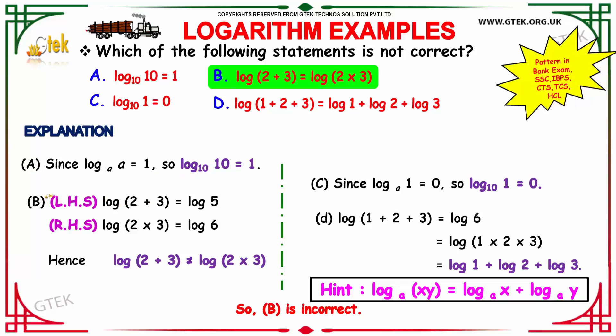Next comes the second option whose right hand side and left hand side has to be analyzed. Left hand side is log(2 + 3) which equals log 5, and our right hand side is log(2 × 3) which equals log 6. Both are unequal as you can see, hence this option is not a valid one.